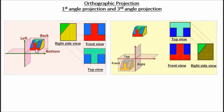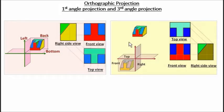Once you've drawn the front in first angle, you draw the top underneath it — you look at it from the top and draw it below — and then you look at it from the side and draw it to the side. So in first angle it forms a shape like a seven. In third angle projection, you put your front view in the third quadrant, draw what you see from the top above it, and draw what you see from the side to that side — so it looks like an L.